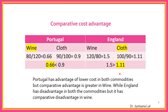Now we will see the situation in England. In England, the per unit cost of wine will be 120 upon 80, which is 1.5. So per unit cost of wine as compared to Portugal in England is 1.5. While the cost of producing one unit of cloth in England will be 100 upon 90, which is 1.11.